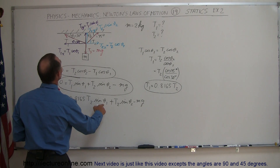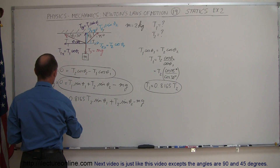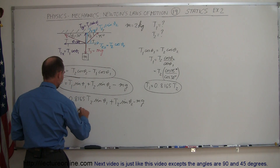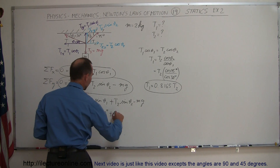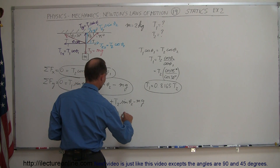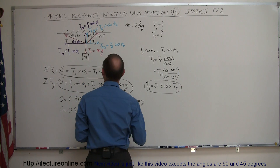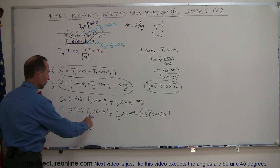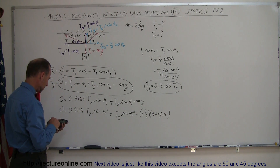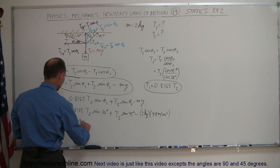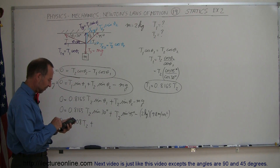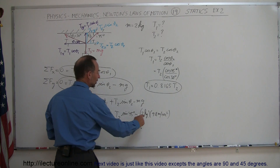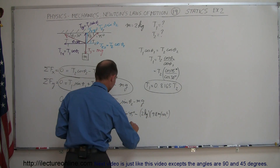Plugging in all known values: sine of theta 1 is sine of 30 degrees, which is one half. Sine of theta 2 is sine of 45 degrees. Mass is 2 kilograms and g is 9.8 meters per second squared. So we have 0 equals 0.8165 T2 times one half, plus sine of 45 degrees times T2, minus 19.6 newtons. This gives us 0 equals 0.408 T2 plus 0.707 T2 minus 19.6 newtons.